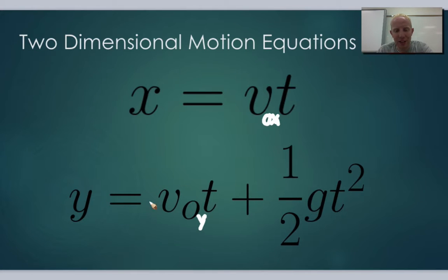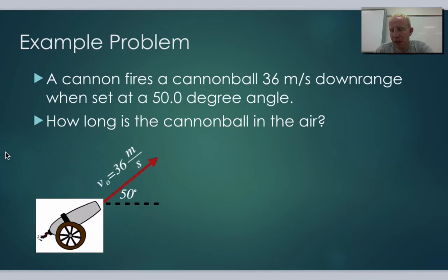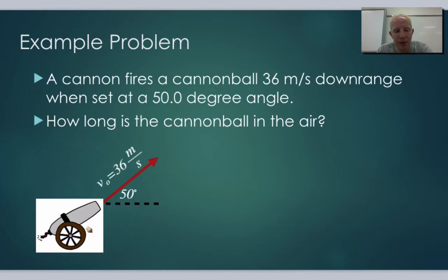Let's try a problem: a cannon fires a cannonball at 36 meters per second at an angle of 50 degrees. How long is the cannonball in the air? Going back to the steps — first, let's find the components of the velocity.